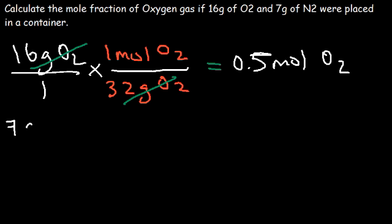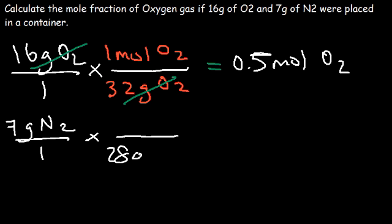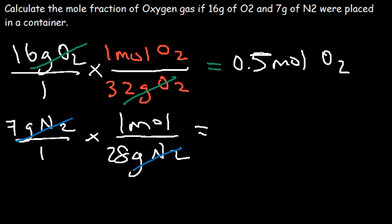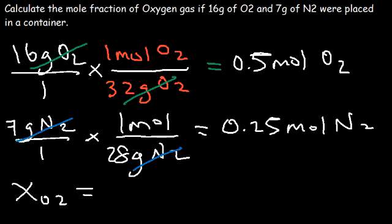Now let's convert nitrogen into moles. The molar mass for N2 is 14 times 2, so 28 grams per mole. Dividing 7 by 28: 28 divided by 7 is 4, so 7 over 28 is one-fourth, which equals 0.25 moles of N2. Now let's calculate the mole fraction of O2: it's the moles of O2 divided by the total moles, which is 0.5 plus 0.25, giving a total of 0.75.